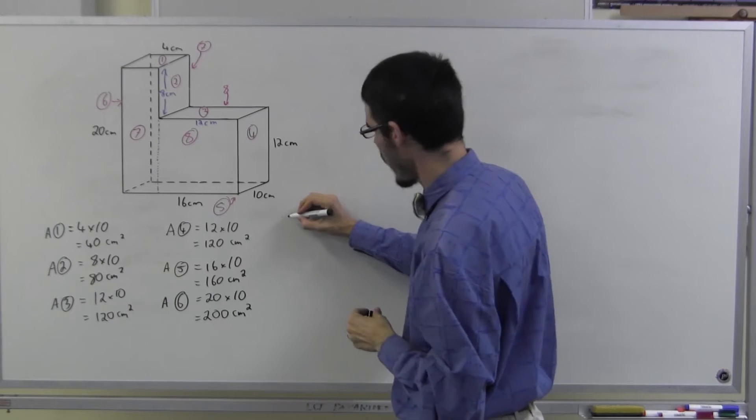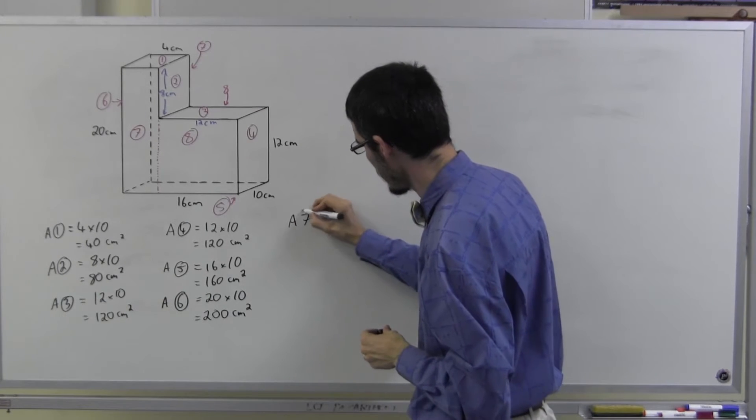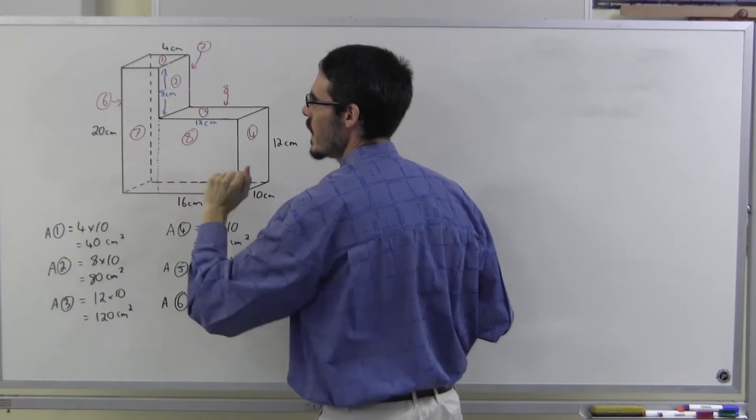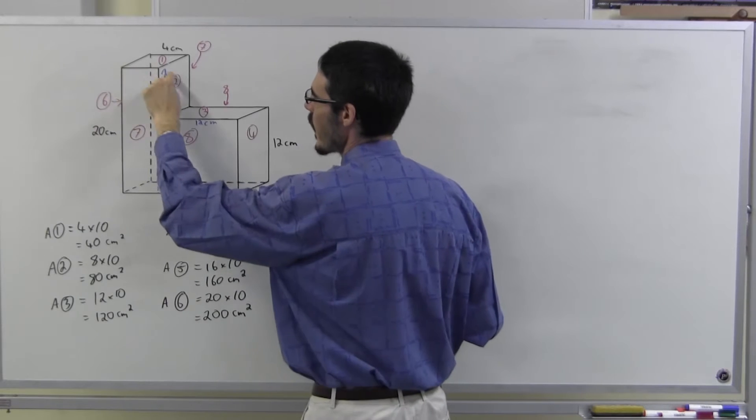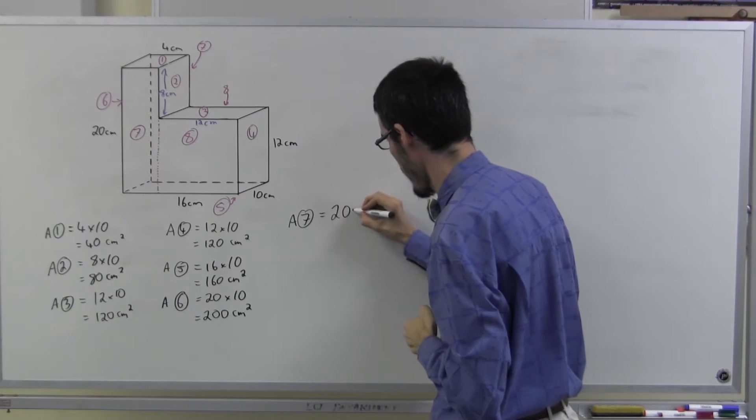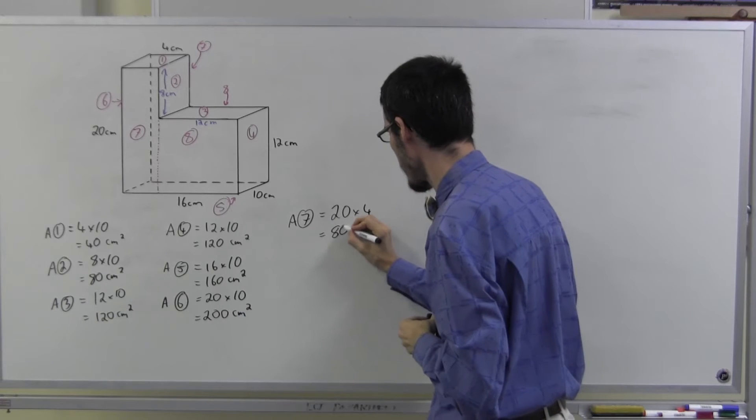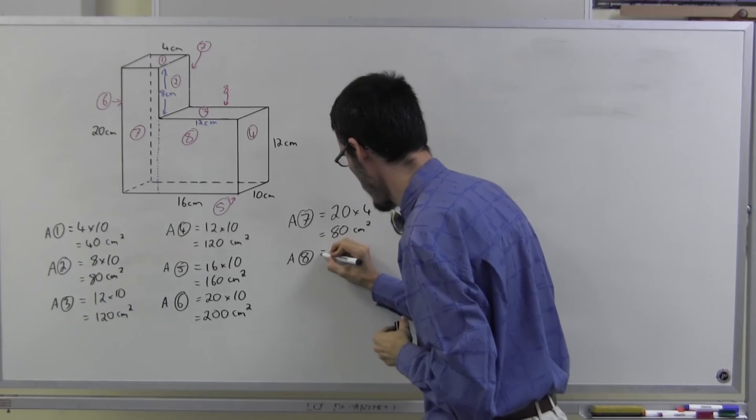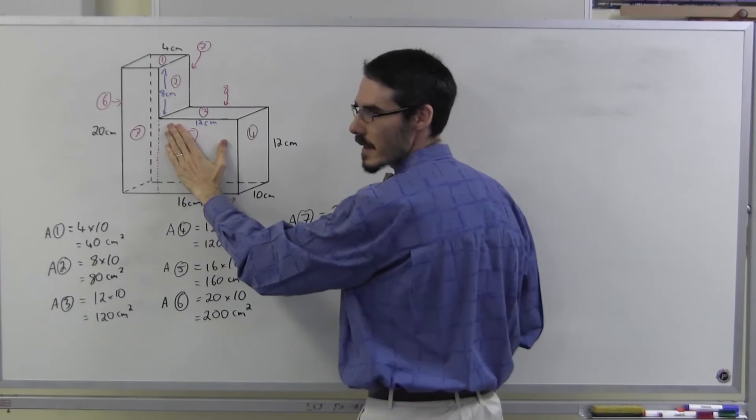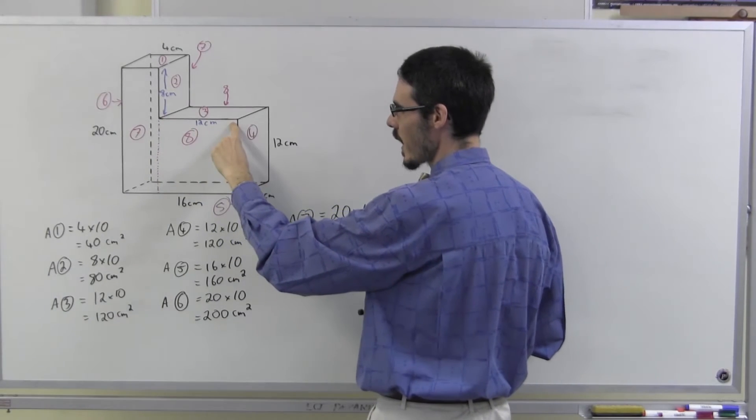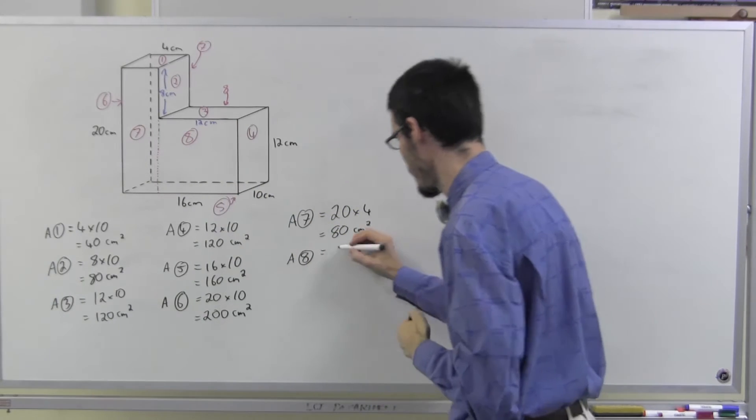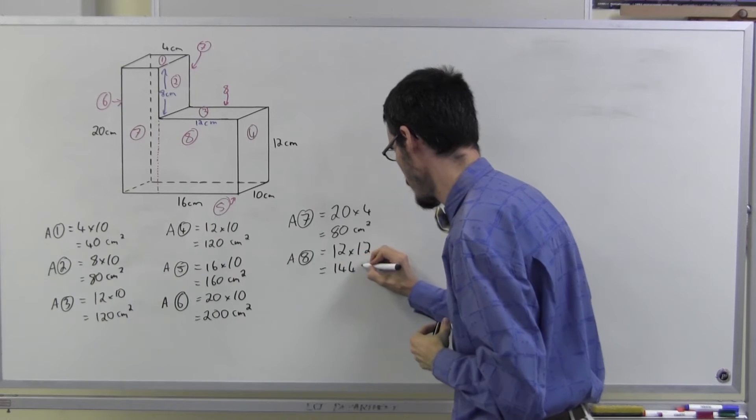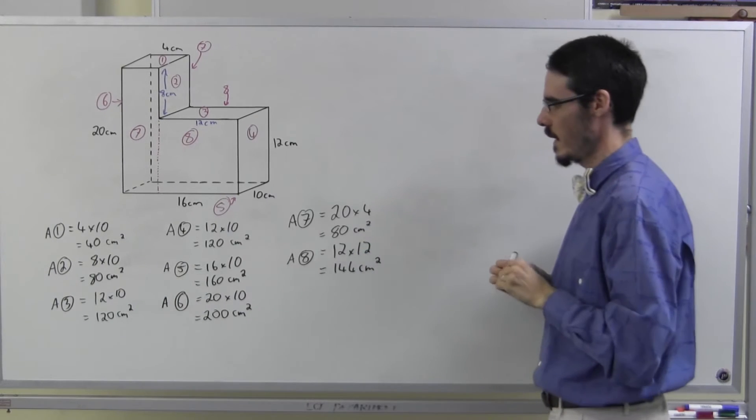Okay, a couple more to go. Now, let's have a look. Number seven. Seven is just this part of that front rectangle. So seven is going to be 20 by four, which is 80. And number eight, this rectangle here, is 12, which we worked out before, by another 12.